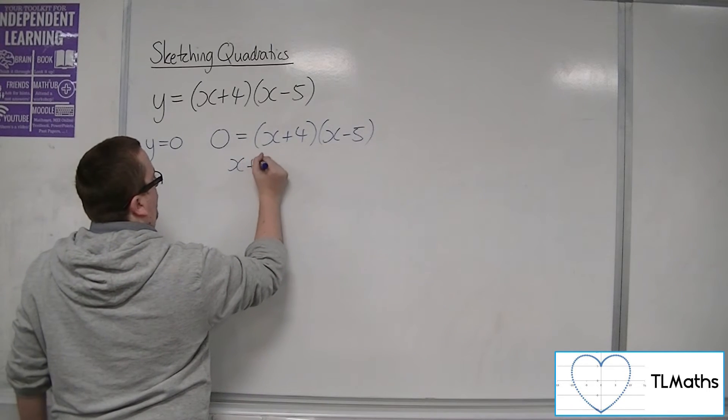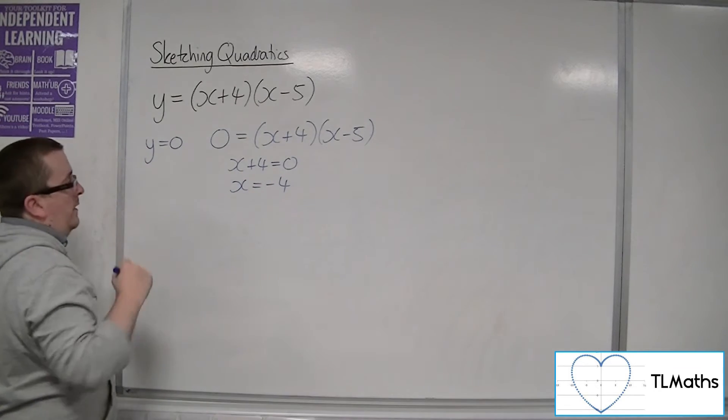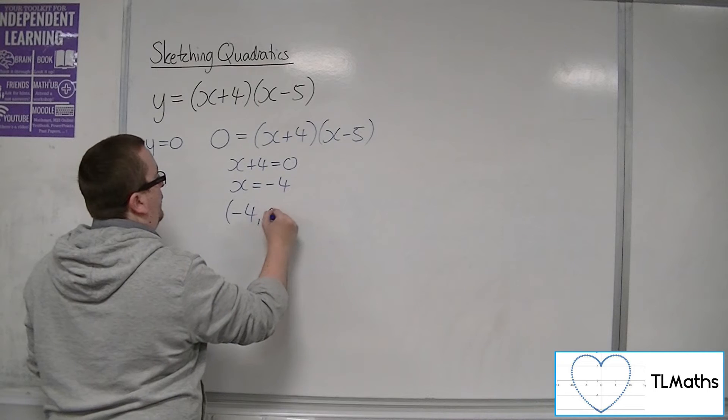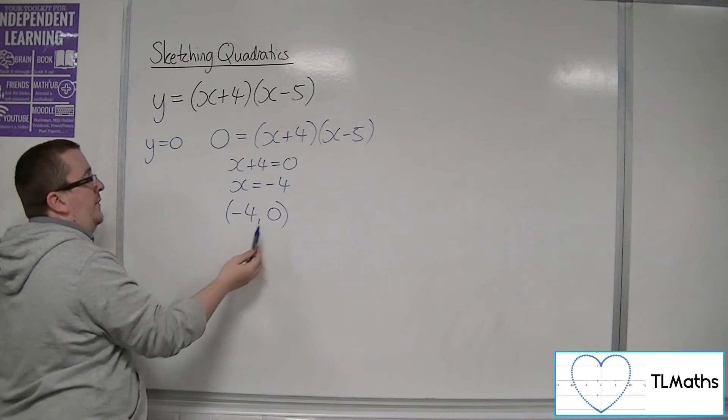One of those two brackets is going to be 0. If the x + 4 is 0, then that means that x must be -4. So, that's telling us that it's crossing the x-axis at (-4, 0). The x coordinate is -4. The y coordinate is 0.